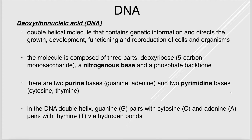DNA — deoxyribonucleic acid — is the molecule that encodes our genetic information. Its structure is a double helix that looks like a twisted ladder, and it's the blueprint for all cellular functions. The molecule has three main parts: a backbone of a sugar called deoxyribose, phosphate, and nitrogenous bases. There are four bases — two purines (guanine and adenine) and two pyrimidines (cytosine and thymine).